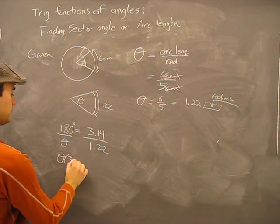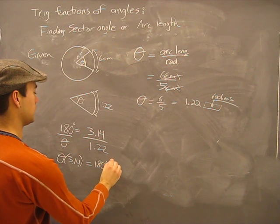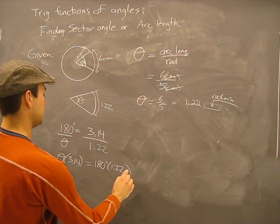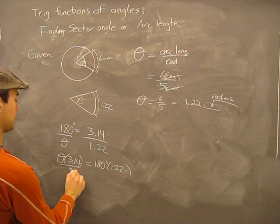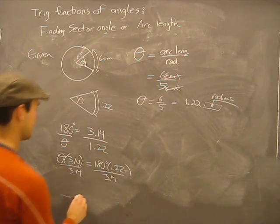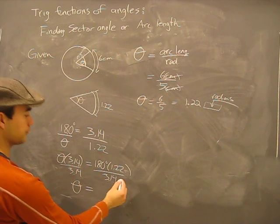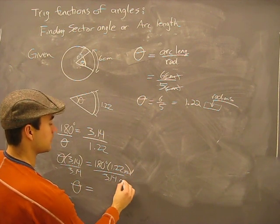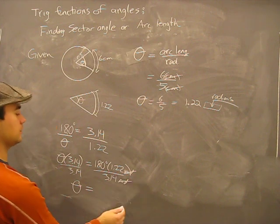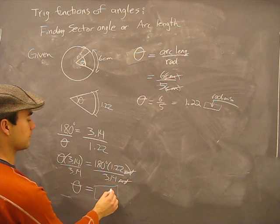Theta times 3.14 radians equals 180 degrees times 1.22 radians, divided by 3.14. That's radian, that's radian, those cancel out. You would get some kind of number in degree form.